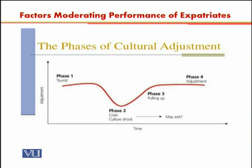On the horizontal axis is time and on the vertical axis is adjustment. Phase one, the Tourist or Honeymoon phase, is a time of excitement — people are excited, families and spouses accompany them, children are along too. They explore the new place, go sightseeing, and the adjustment level is very high. No problems are usually detected at this point.